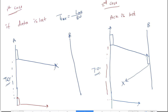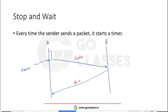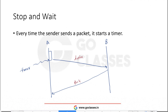So Stop-and-Wait is a very simple protocol: send a packet, stop, and wait for the acknowledgement. Once the ACK comes, send the next packet. Alternatively, instead of stopping, we could pipeline packets — pipeline protocols do not wait for the ACK and instead keep filling the channel with packets. We will discuss pipeline protocols later.